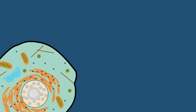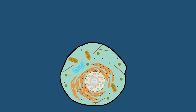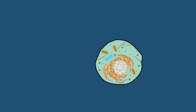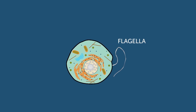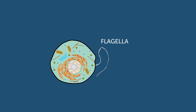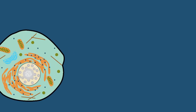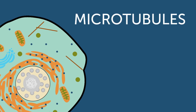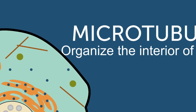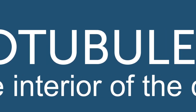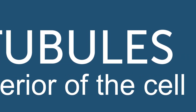The largest of the fibers found in the cell, microtubules, are used by some cells to form tiny thread-like structures called flagella and cilia. These tiny structures can be used for cell movement. Within the cytoskeleton, microtubules also organize the inside of the cell. Microtubules are like the rafters of a building — they provide support and organization to the interior of the cell.